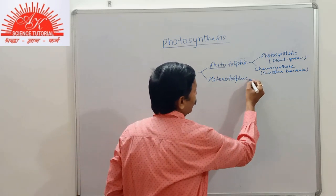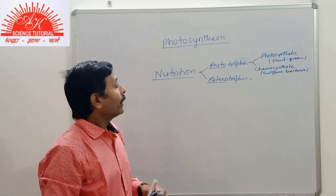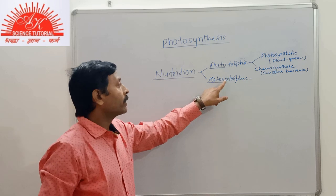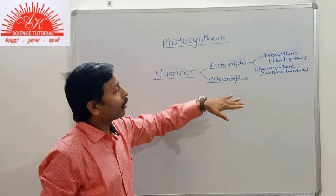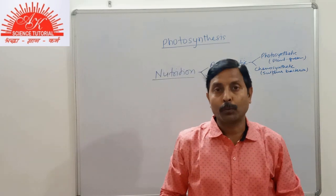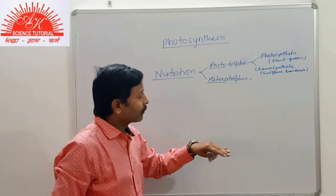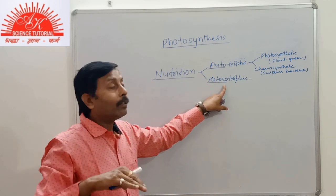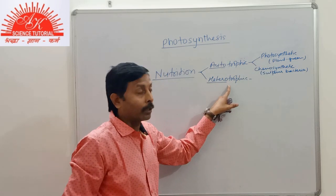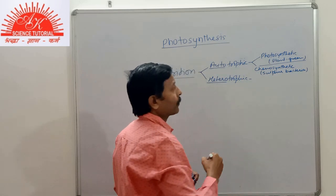Heterotrophic nutrition — hetero means different. Animals and fungi derive food from other organisms; they do not prepare their own food. They depend directly or indirectly upon plants for their food. So, the green plants are called autotrophs.